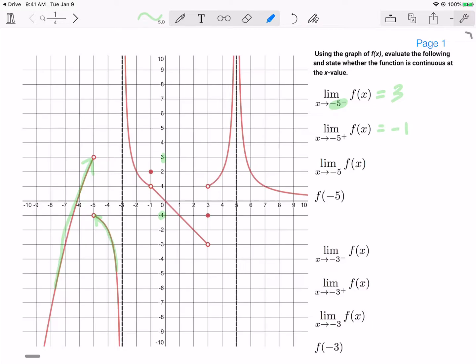Because those values are different, 3 does not equal negative 1, the limit as x goes to negative 5 does not exist. And because neither of the holes are filled in at x equals negative 5, if I draw a vertical line I don't pass through any solid points, so this function is also not defined at the point x equals negative 5.